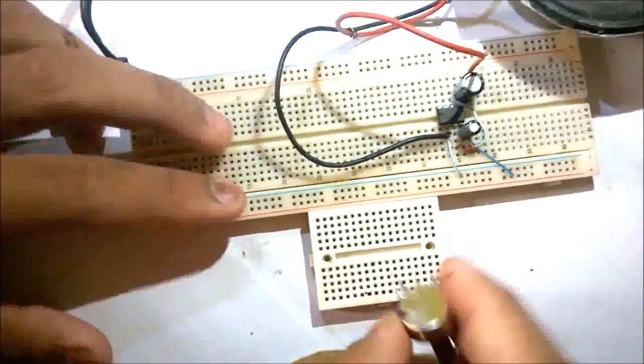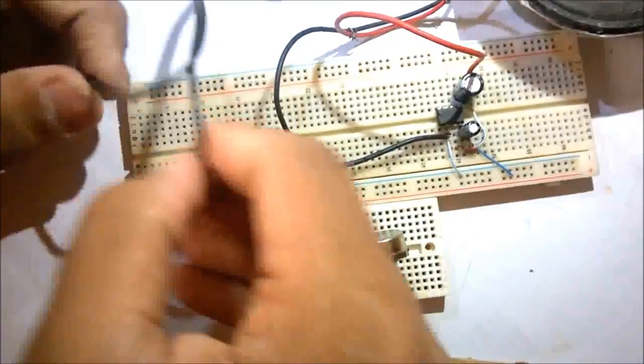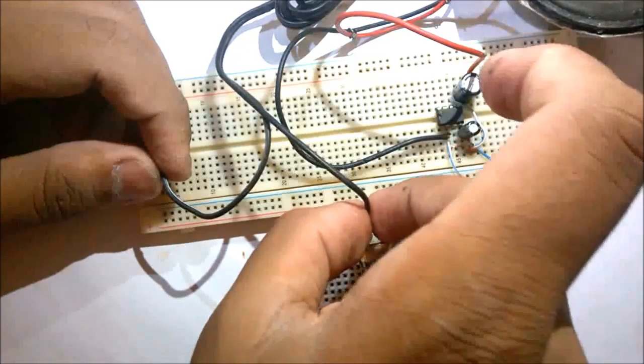Now I am going to add a volume control using a 100k potentiometer. Connect the middle leg of the potentiometer to the third pin of the IC. Now left pin to the audio input and right pin to the ground.